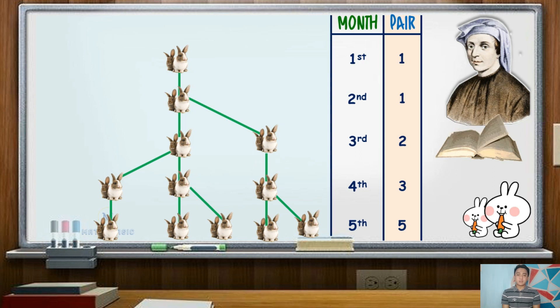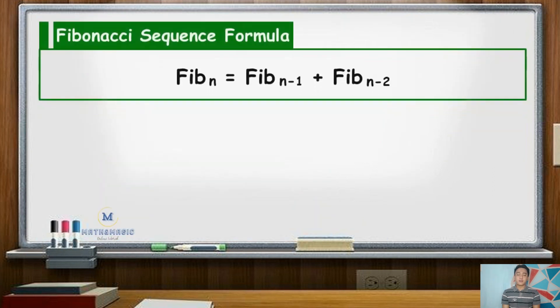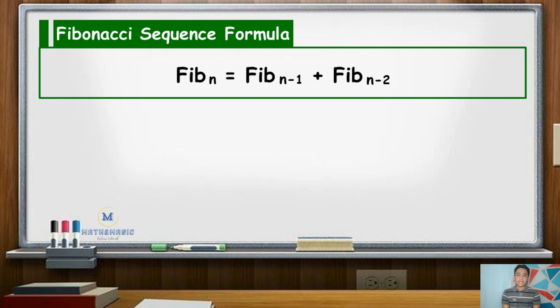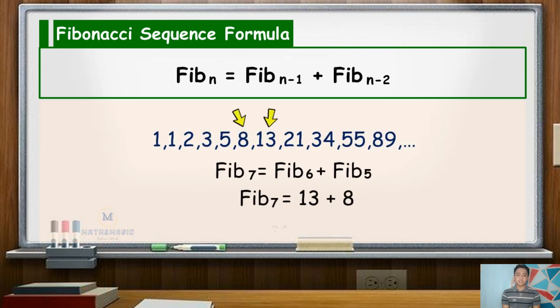Basically, Fibonacci sequence is defined by the recursive formula Fib_n equals Fib_(n-1) plus Fib_(n-2). In this formula, notice that to get the nth term, we need to get the sum of the two preceding terms. Also take note that the first and second term of this sequence is 1.